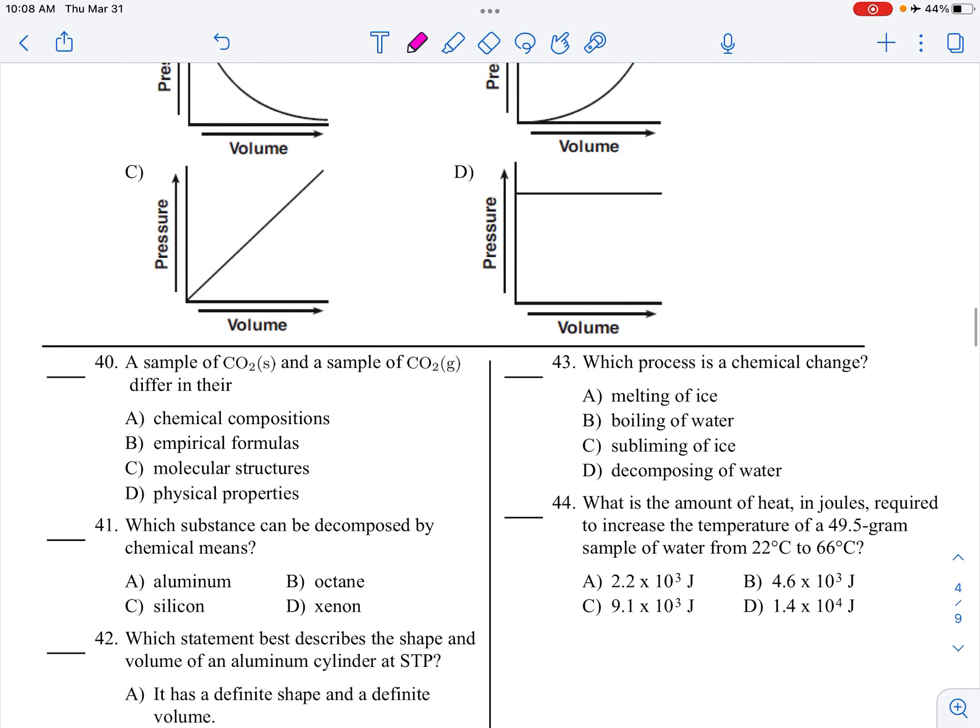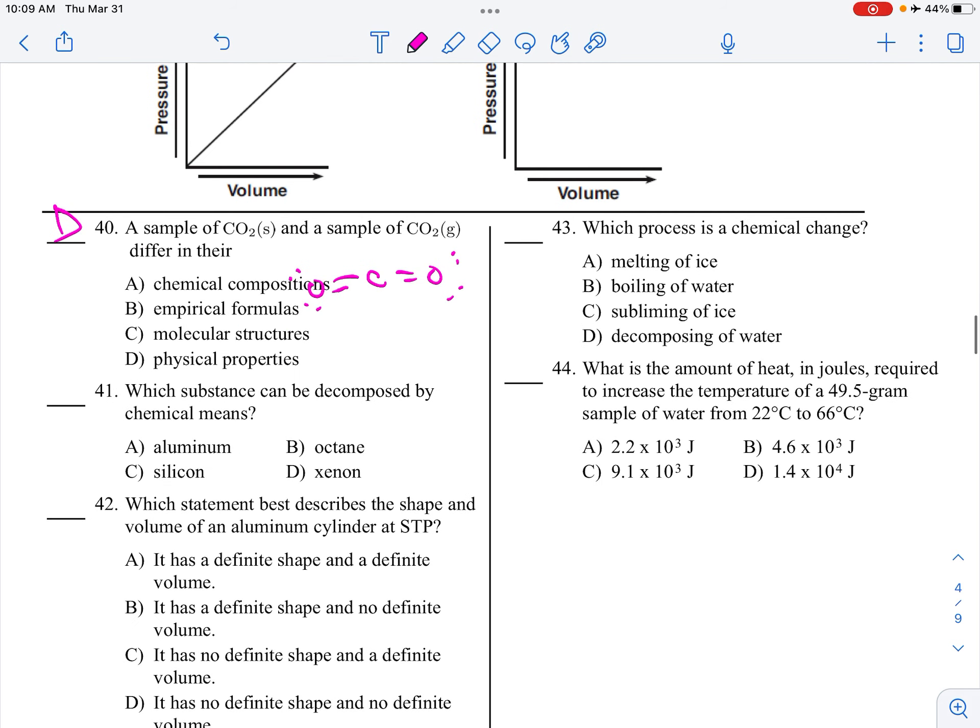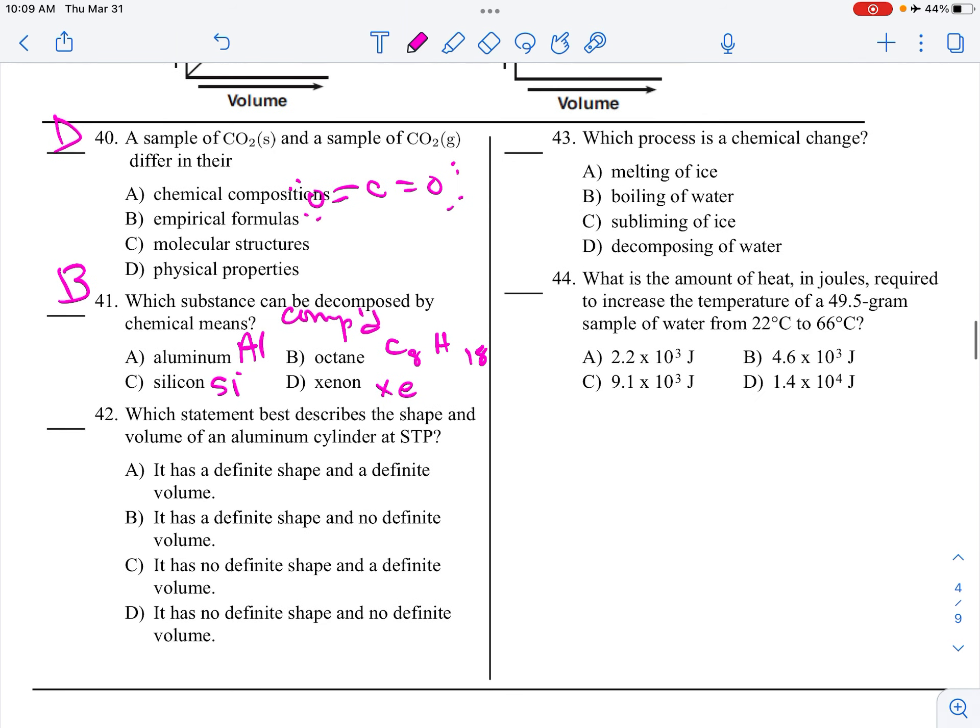Okay, CO2 solid and CO2 gas, what's going to be different? It has to be physical properties, because the molecular structure of CO2 is always going to look like this. Chemical composition is the same, and empirical form is the same. Which can be decomposed by chemical means? Anything that's an element, sure as heck, cannot. Octane is C8H18. Yeah, that's definitely it. This is a compound. You need a compound.